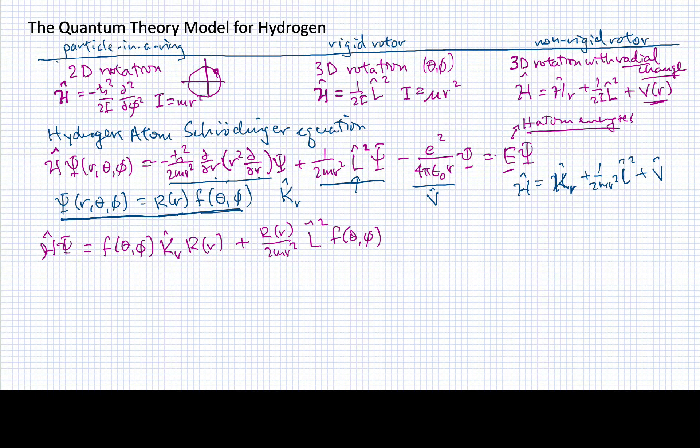My potential energy operator doesn't have any derivatives. It just multiplies these two functions. This is equal to E times the product of these two functions.